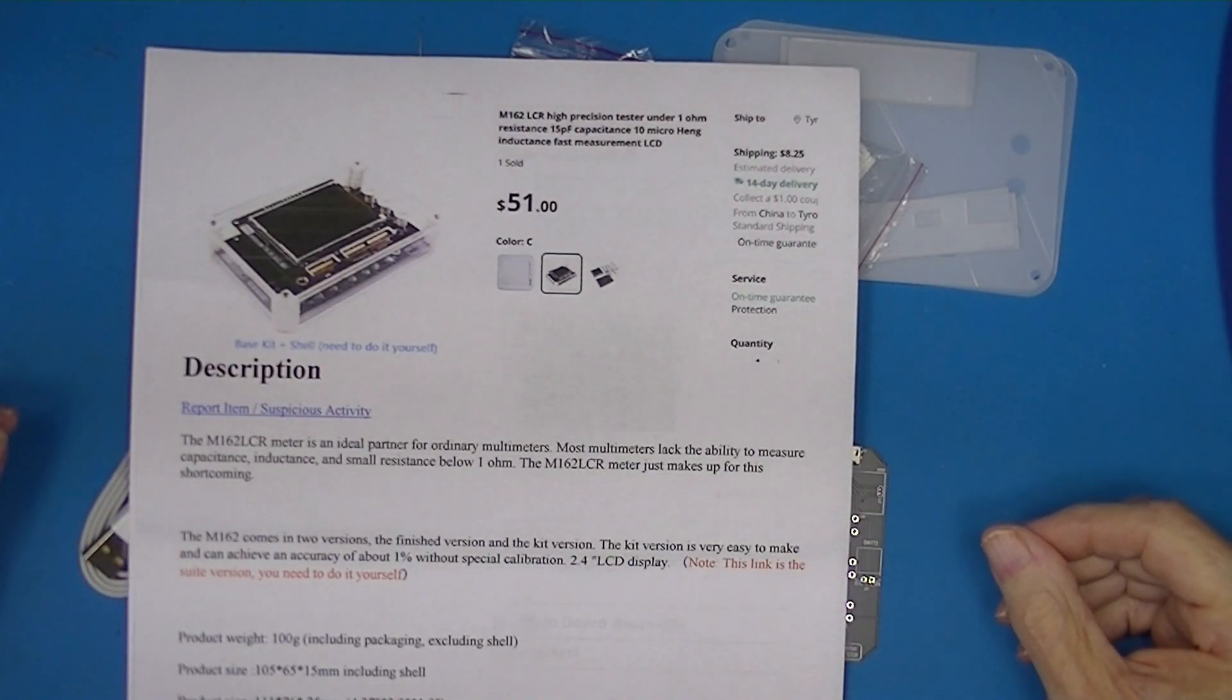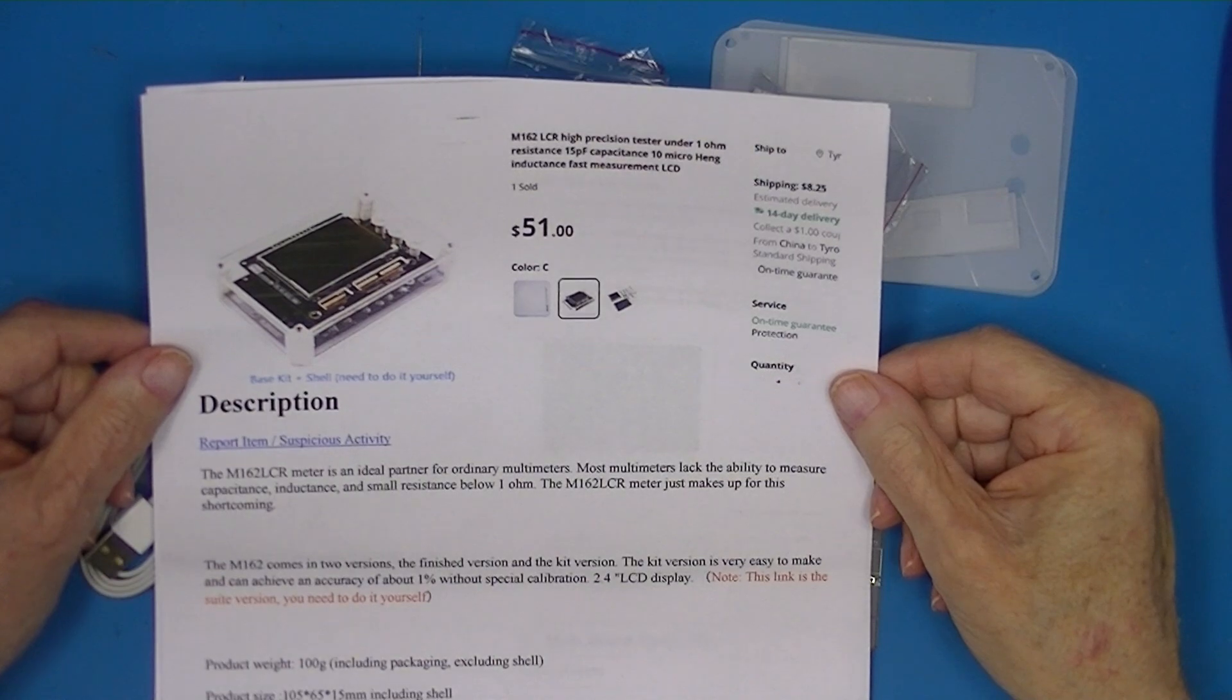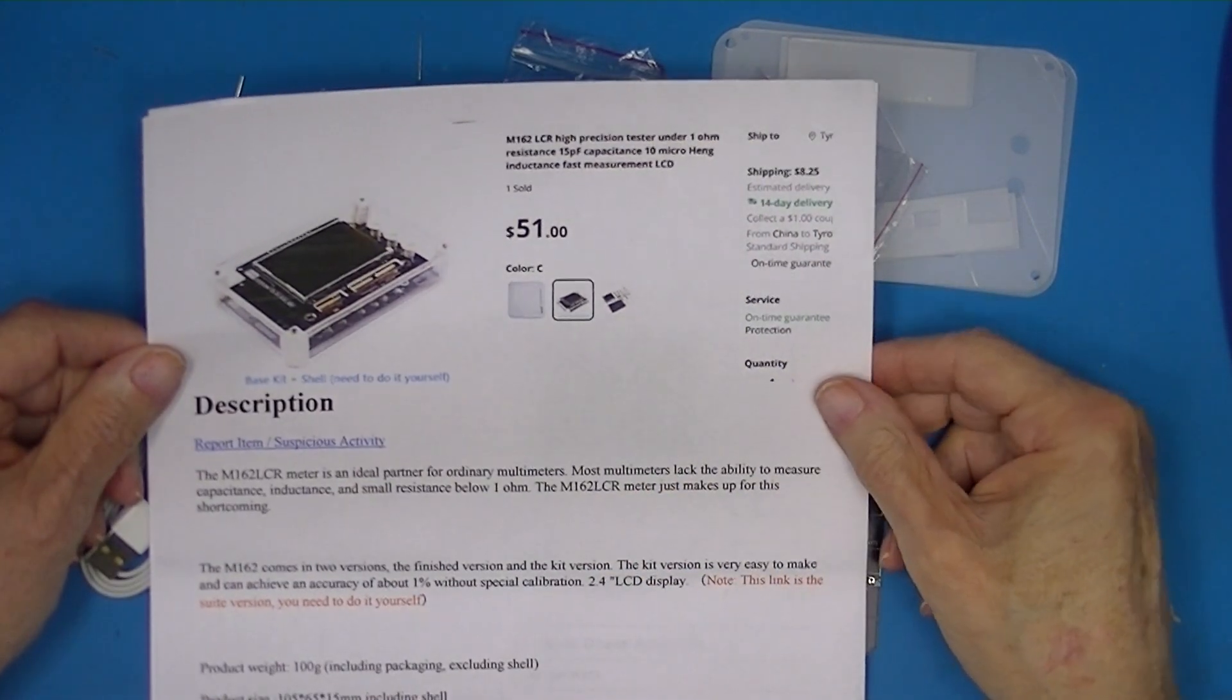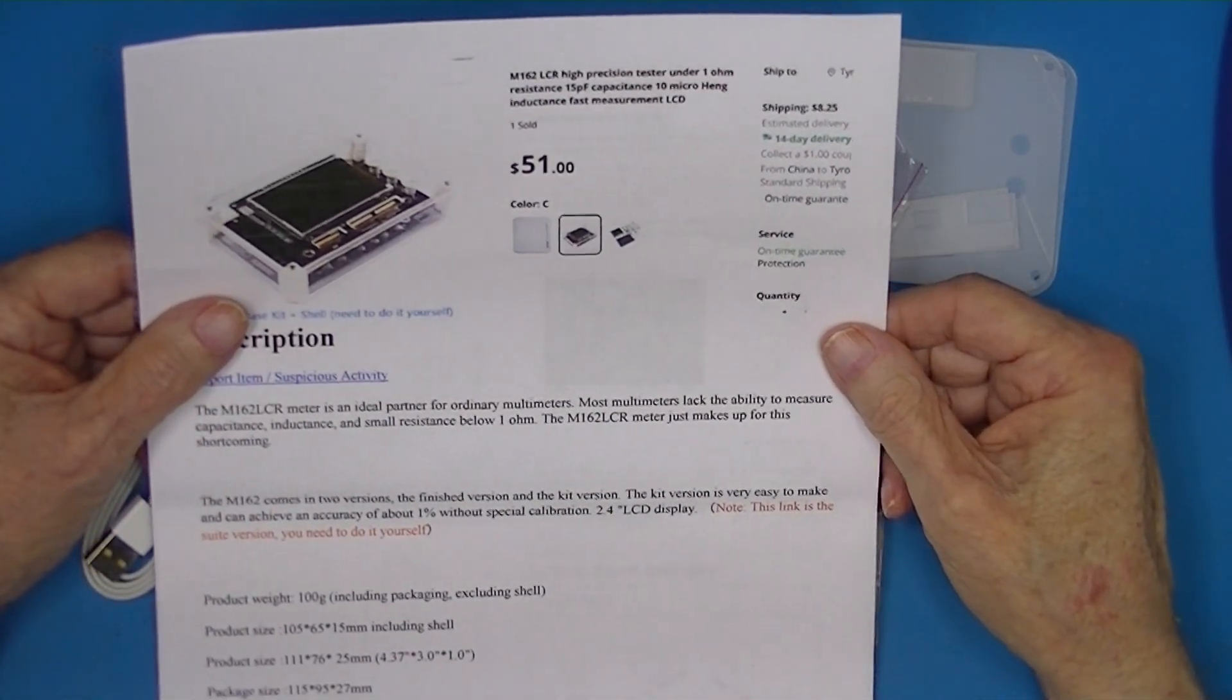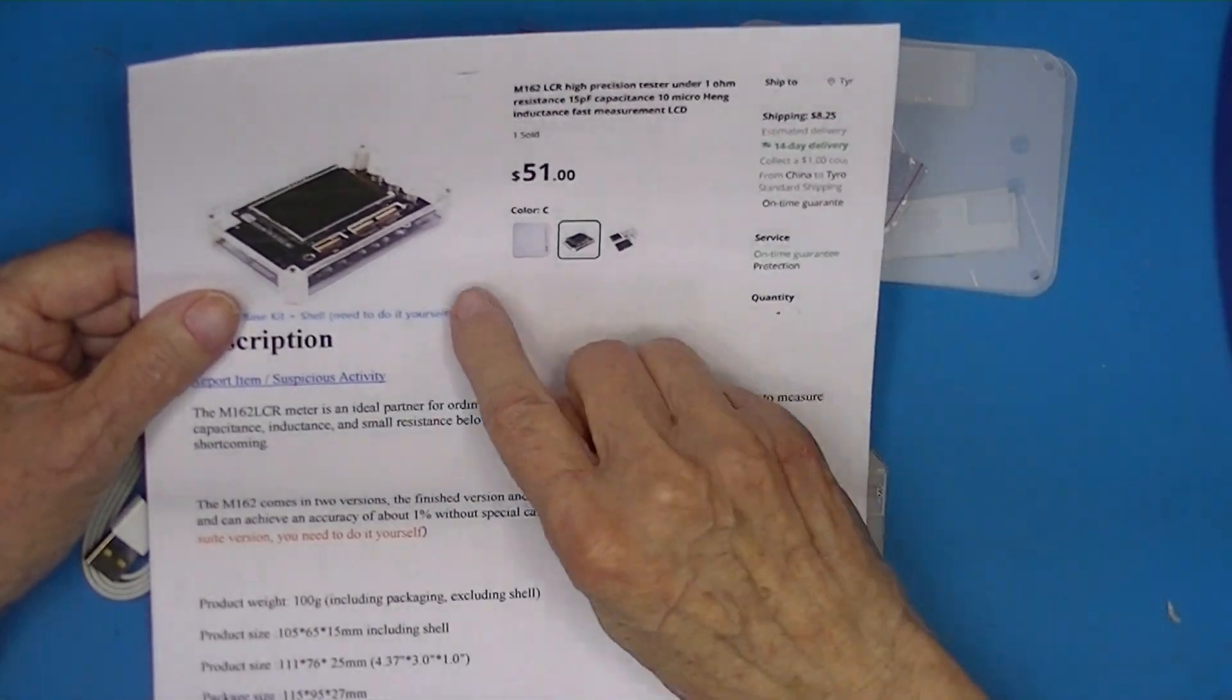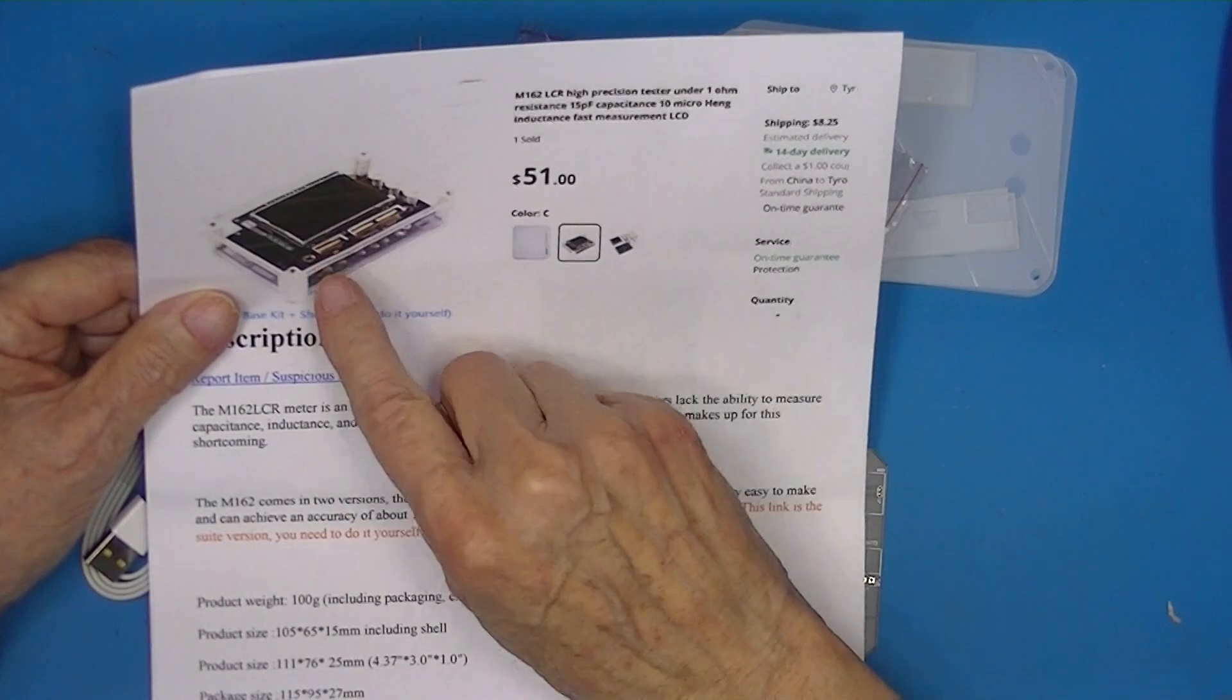I'm going to proceed to assemble this M162 LCR meter. It costs around $60 from Ali and it purports to be an LCR meter with 1% accuracy. It has provisions for four-wire external connections as a guard.